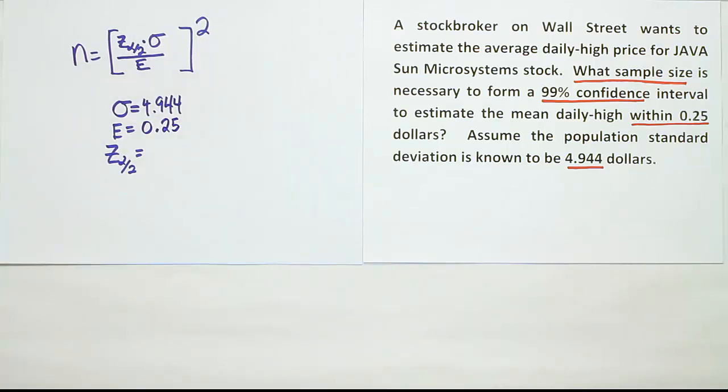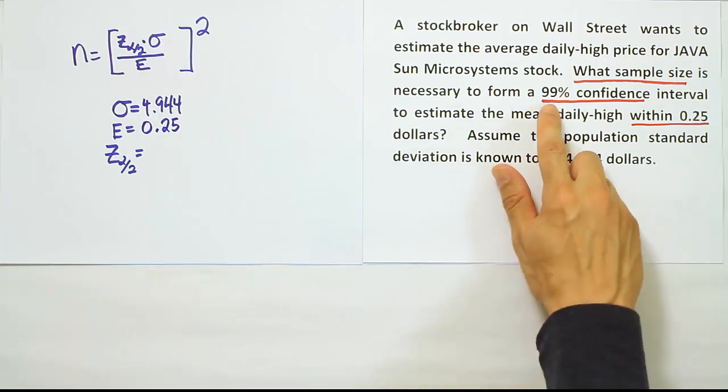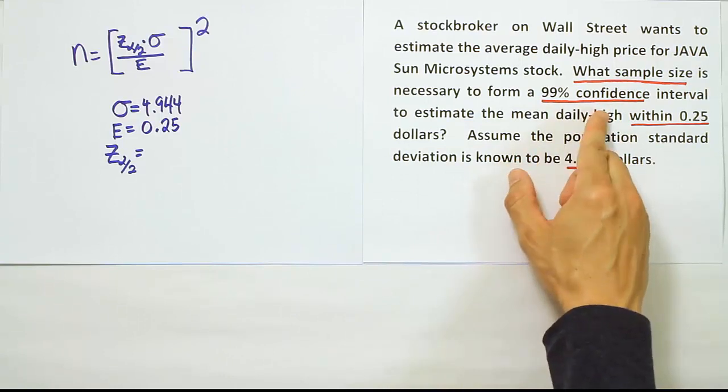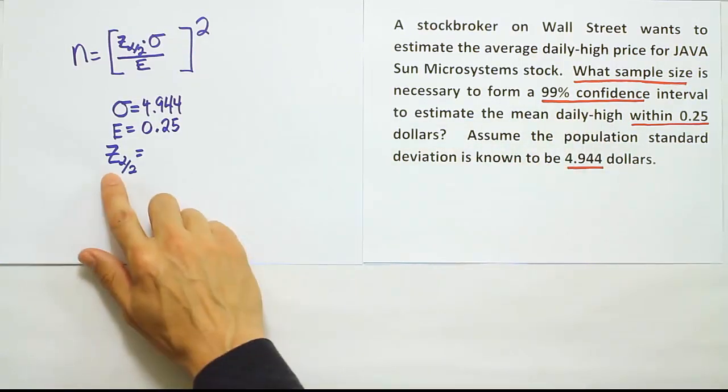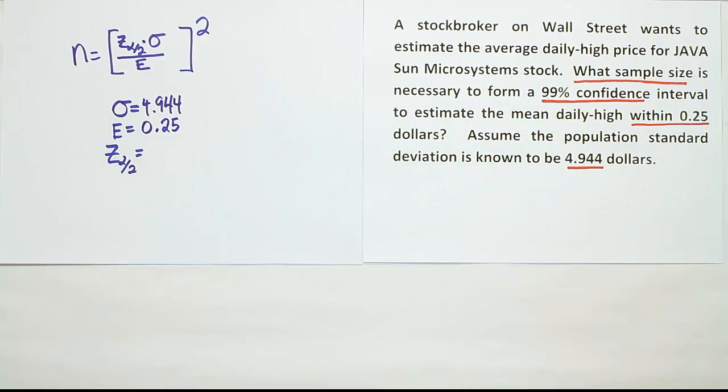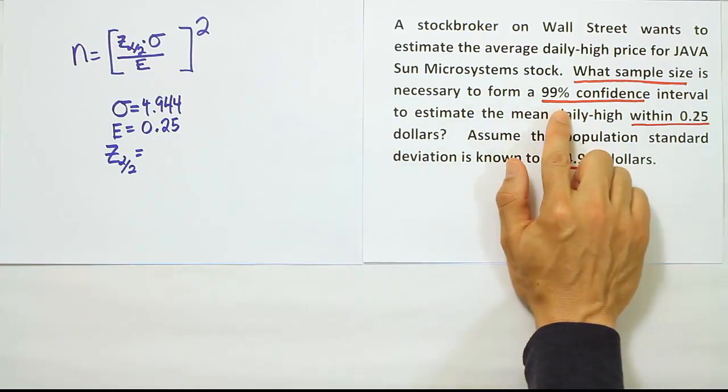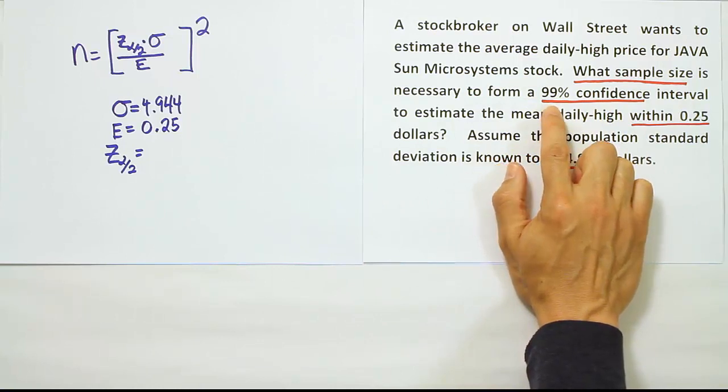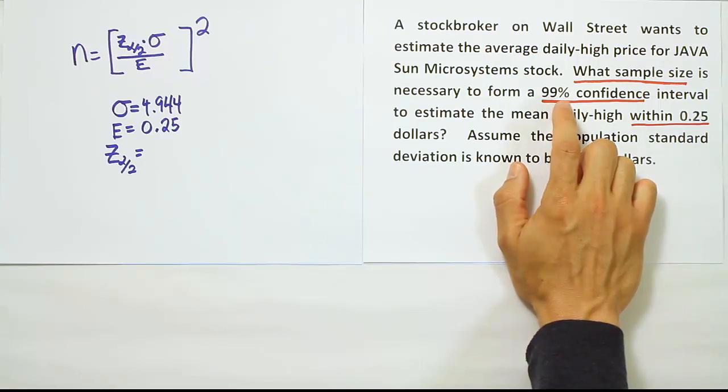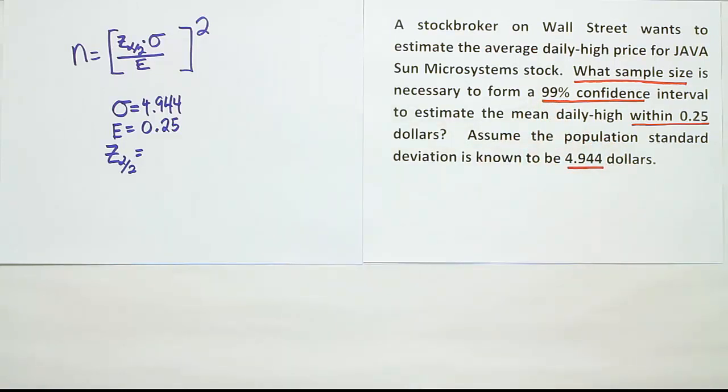And then lastly, we have one other number in the problem. We have this 99% confidence. In order to figure out the z alpha divided by 2, we have to have a confidence level. And so if you remember how we did that, essentially, if we wanted to have more accuracy, we went to the t-table, and we'd look up alpha divided by 2 under the infinity row of the t-table.